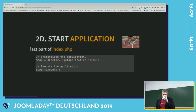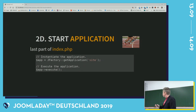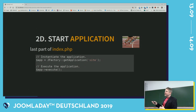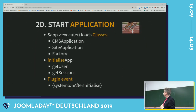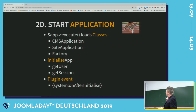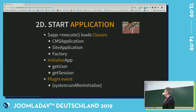The last part of index.php is where execution starts. What you see here is JFactory::getApplication('site'). This is for the front end of the website. If you go to slash administrator, then it will be 'administrator.' Because the administrator uses most of the same libraries but also a couple of other libraries. Then the application starts, and the first thing it will do is load some classes like the CMS application, the site application, and the factory application.